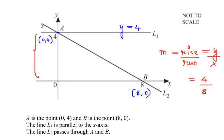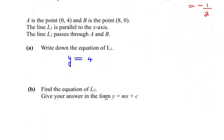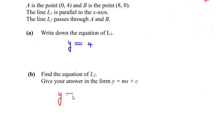Next we need to determine whether it is a positive or negative gradient. Looking at the line from left to right, the direction is downwards, so the gradient is negative. If the line were increasing from left to right, the gradient would be positive. In this case it is negative, so we get the gradient as negative 1 over 2.